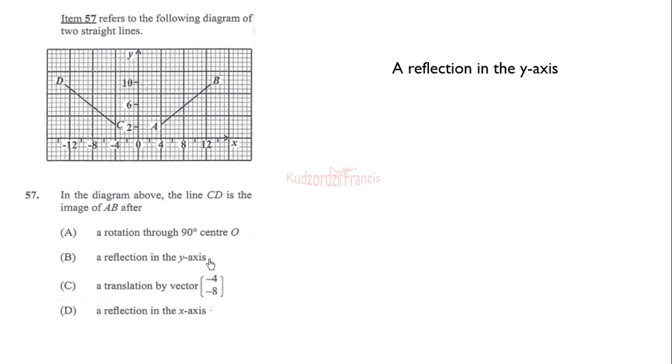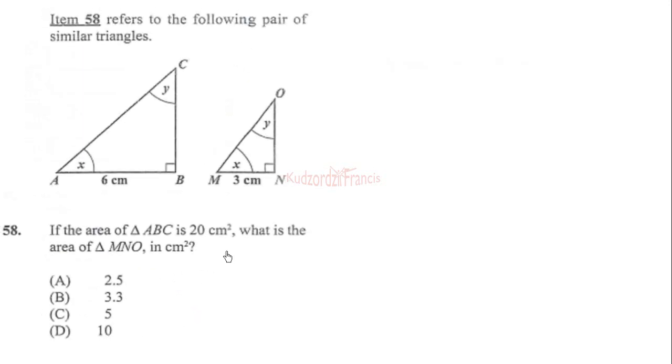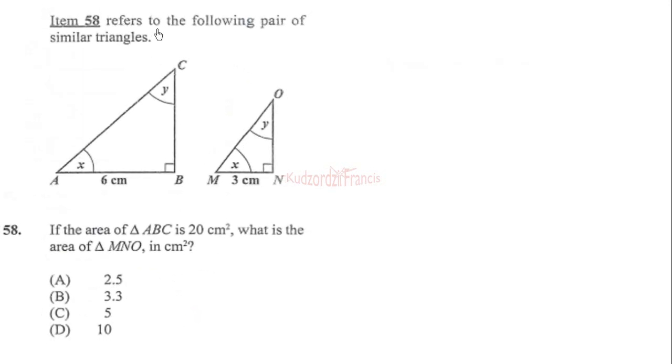Now item 58 refers to the following pair of similar triangles. We want to find the area of triangle MNO if the area of ABC is 20 square centimeters. We can see that this has been reduced to obtain this, so we need to first determine the scale factor. The scale factor is given by 3 over 6, which is 1 over 2.